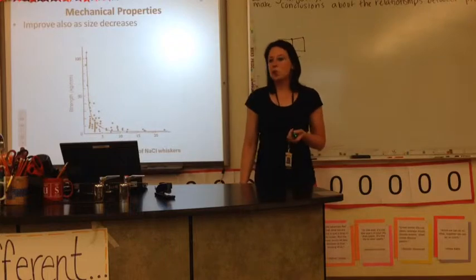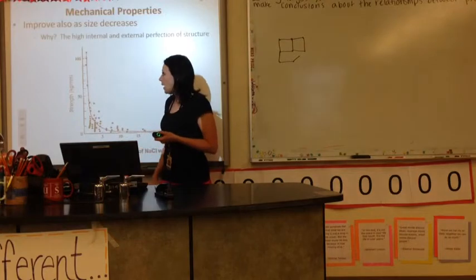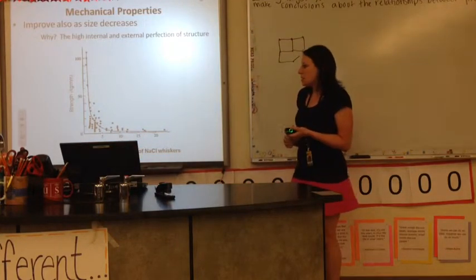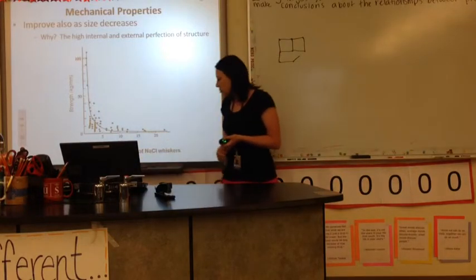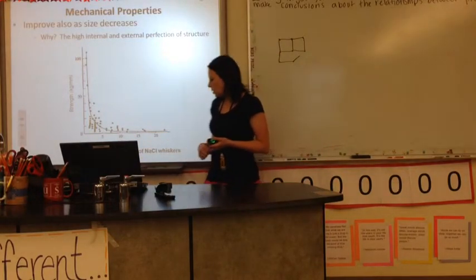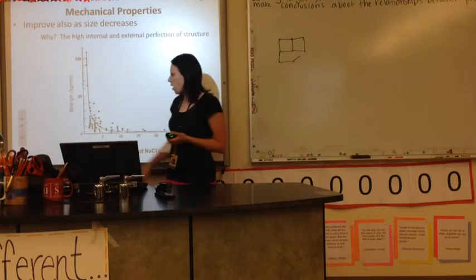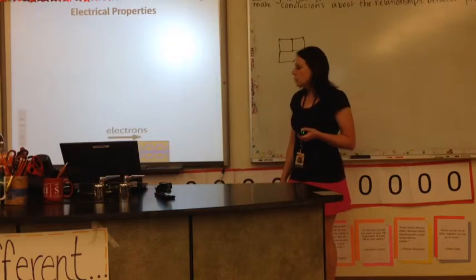Mechanical properties. So this is talking about strength. So as size decreases, things get stronger. And it has to do with that perfection. Because there aren't any mistakes in the structure, they're really, really strong. This is a graph showing the strength of NaCl whiskers. As they were smaller in microns, the strength went up relative to their size. So that's interesting.